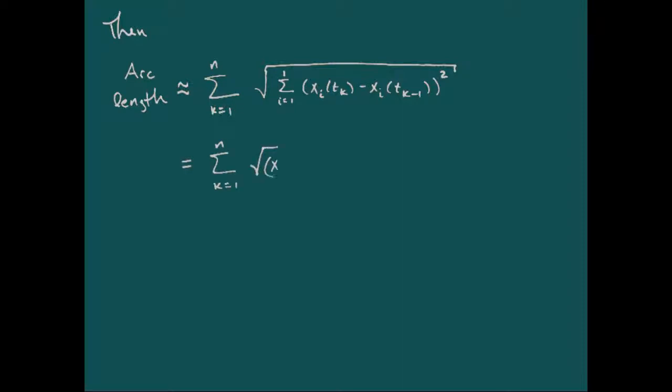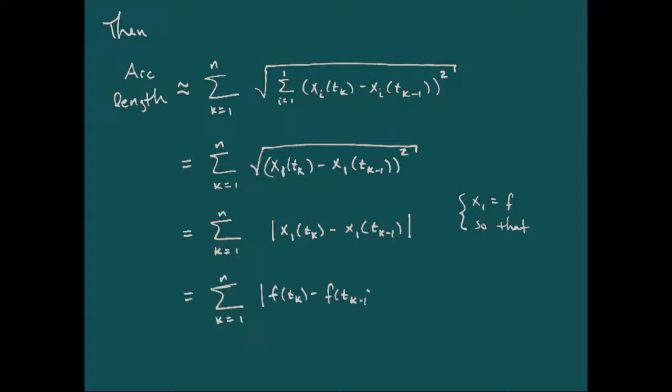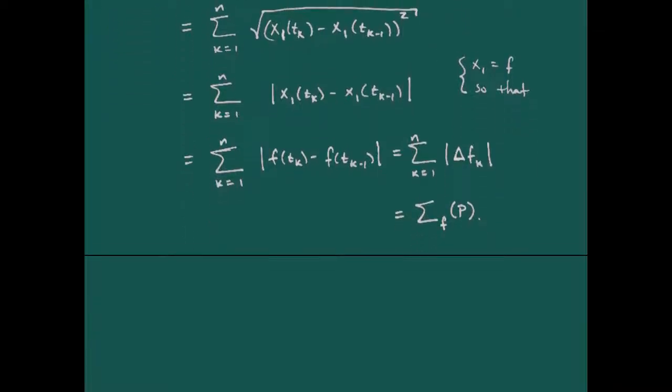And so when we just simply restrict to the case that m is 1, our summation just becomes the sum over 1 and only 1 element. We take the square root of something squared. What happens? We just drop the square and we throw in the absolute values. And so now if we replace x sub 1, our component of our function, if we just replace x sub 1 with f, then what we end up with is exactly our delta f sub k's, the absolute value of our delta f sub k's.